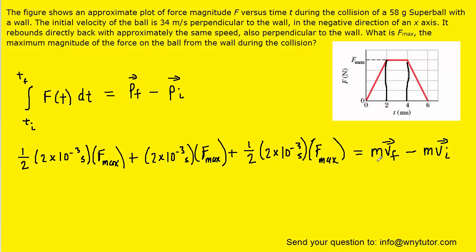And in fact, the question gives us the mass. It says that it's 58 grams. Of course we'll have to convert that into kilograms. And then for the final and initial velocities, we note that the initial velocity of the ball is 34 meters per second in the negative direction of an x-axis. So that means that the initial velocity will have to be represented as negative 34 meters per second.